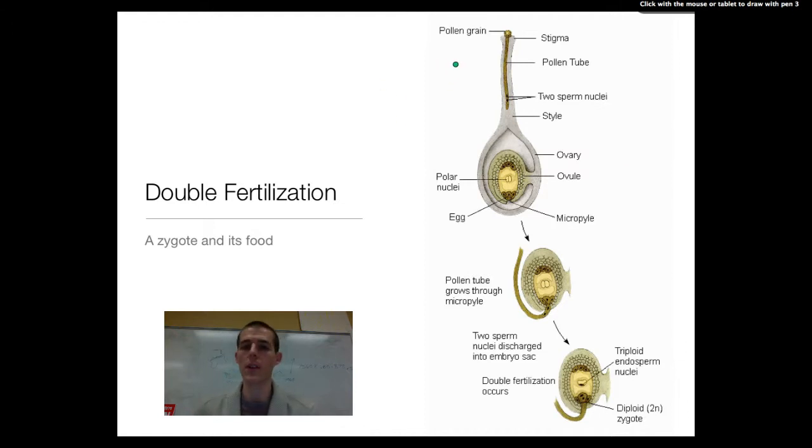Pollination is different from fertilization. Know that pollination is just the pollen grain sticking to the stigma. Fertilization is where the sperm actually gets to the egg. So here's kind of how the steps work: pollen grain lands on the stigma and first thing that happens is a little tunnel grows called the pollen tube.